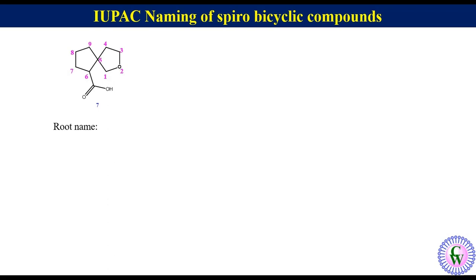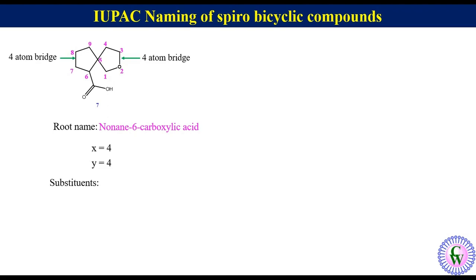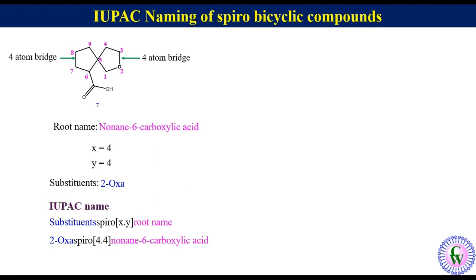Root name: there are 9 atoms in the ring with a carboxylic group at C6, so the root name will be nonane-6-carboxylic acid. There are two 4-atom bridges, so x = 4 and y = 4. Substituent: carbon at C2 has been replaced by oxygen, written as 2-oxa. IUPAC name: 2-oxaspiro[4.4]nonane-6-carboxylic acid.